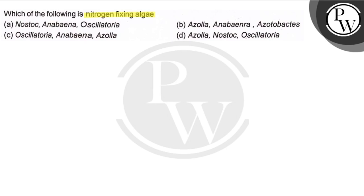So, the key concept involved in this question is the knowledge of blue-green algae which fixes nitrogen. Here it means blue-green algae, or cyanobacteria. The first option is Nostoc, Anabina, Oscillatoria — all three are cyanobacteria or blue-green algae.